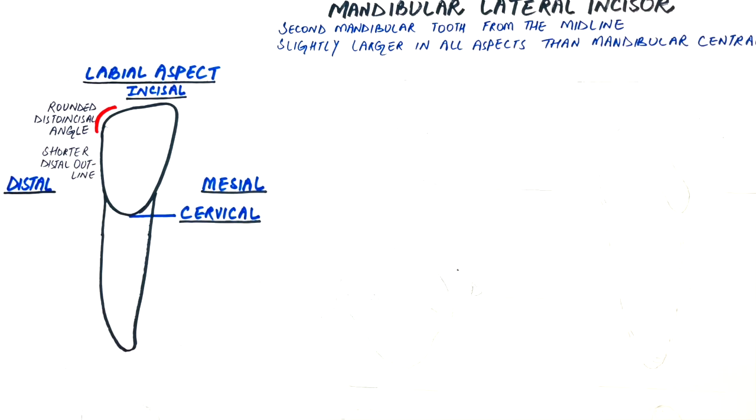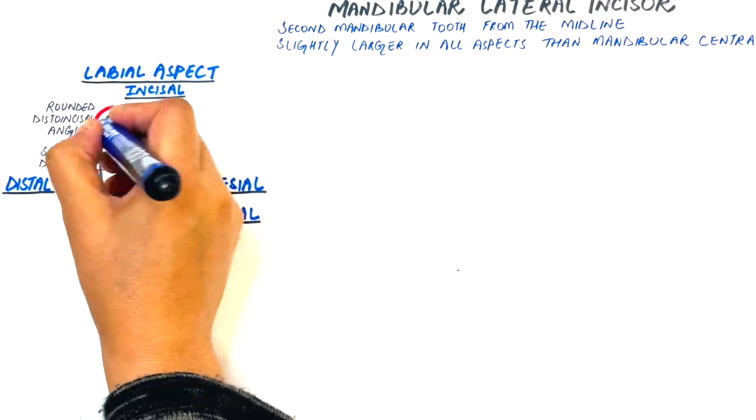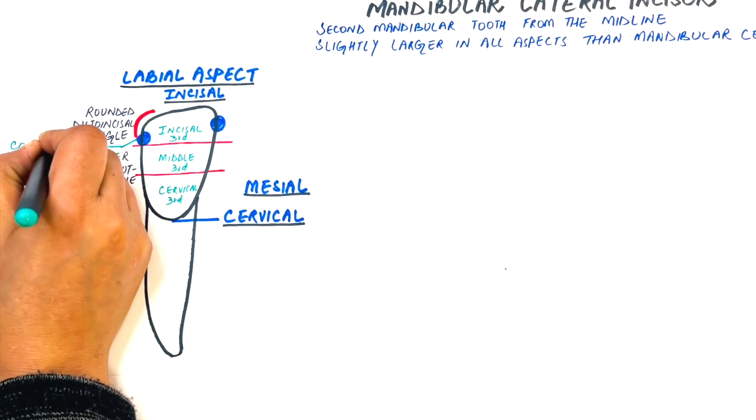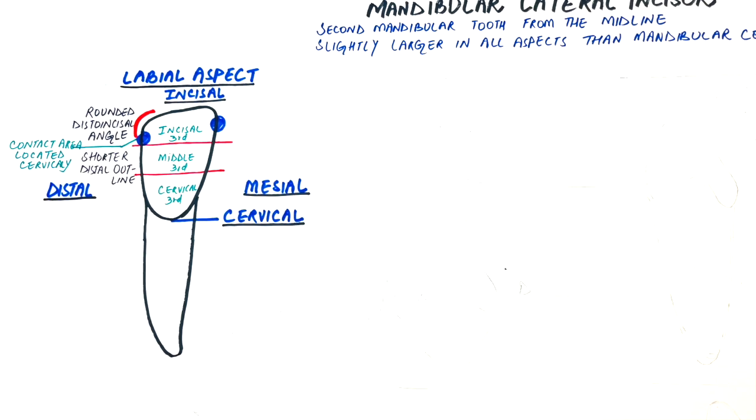Also, the contact area on the distal outline is located more cervically than the mesial contact area, but still both being at the incisal third. The contact areas on the mandibular central incisor, however, were located on the same level at distal and mesial margins.